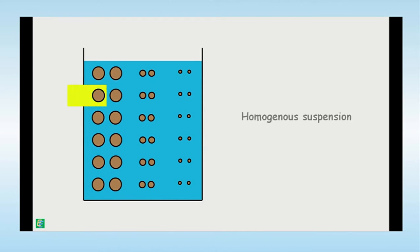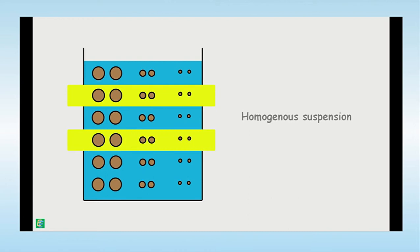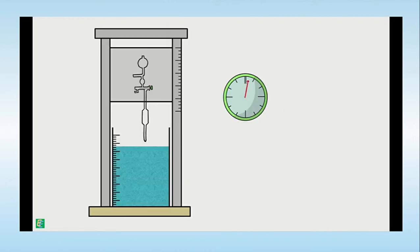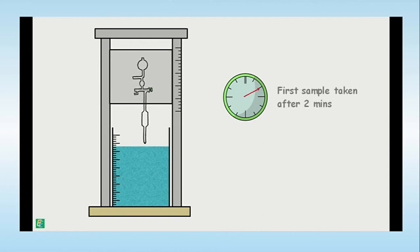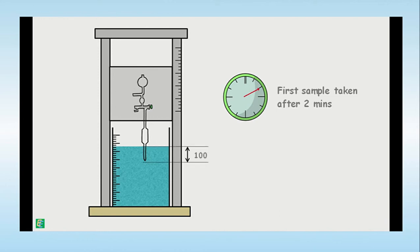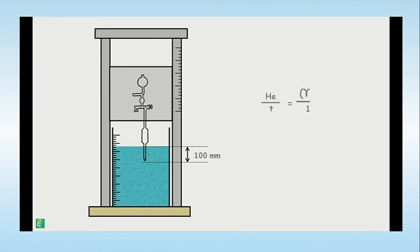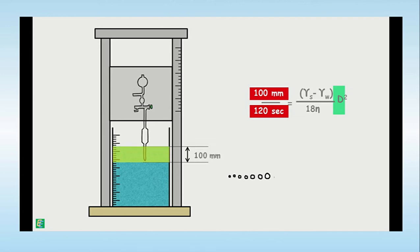From this homogeneous suspension, after a particular time period, we take out a desired volume of sample. For example, the first sample is taken after two minutes. We lower the pipette for 20 seconds before withdrawing the sample. We record the time t as two minutes and the height h as 100 mm.